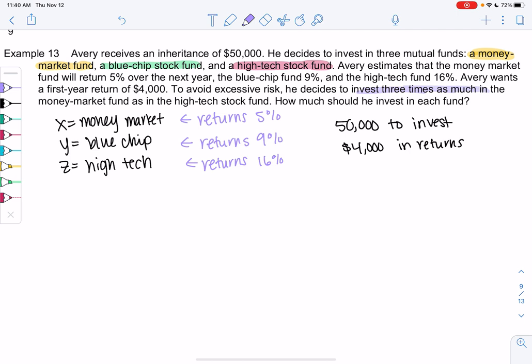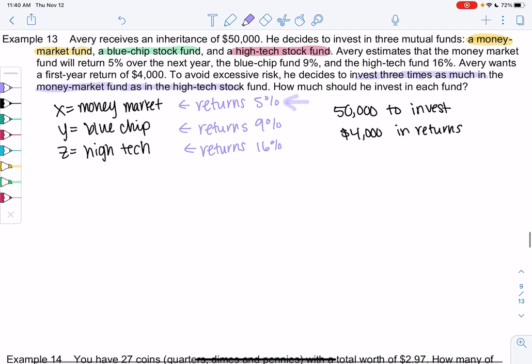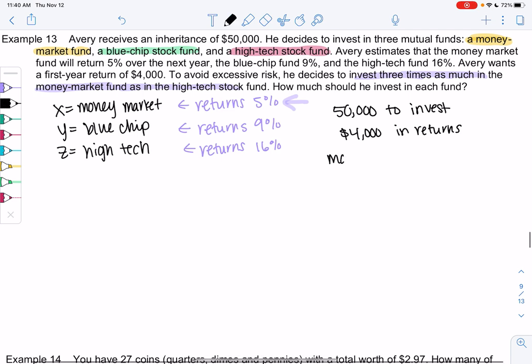We're going to put a little bit more money in the money market, just because this one's the lowest risk. You're less likely to lose money. Three times as much in the money market as the high-tech, so the money market, or X, will equal three times the high-tech, so 3Z.